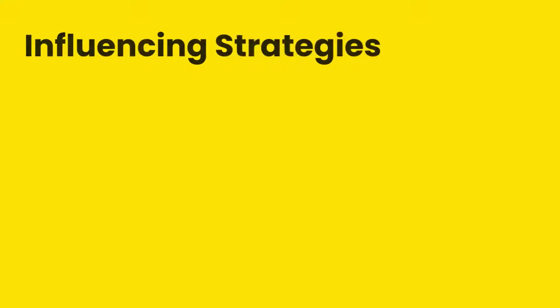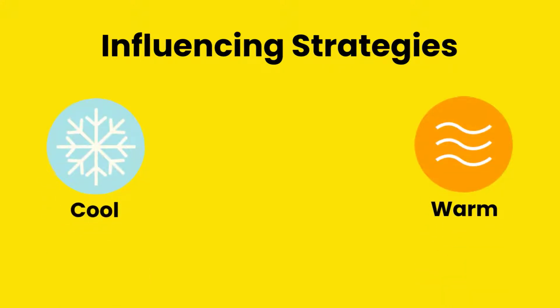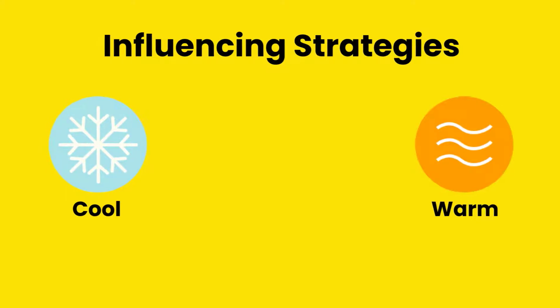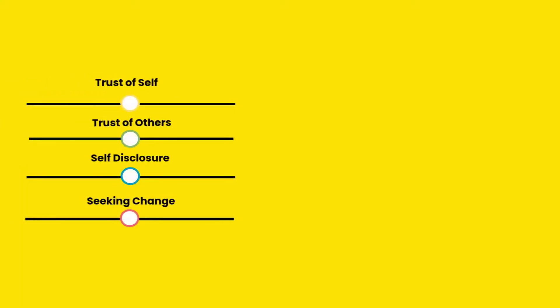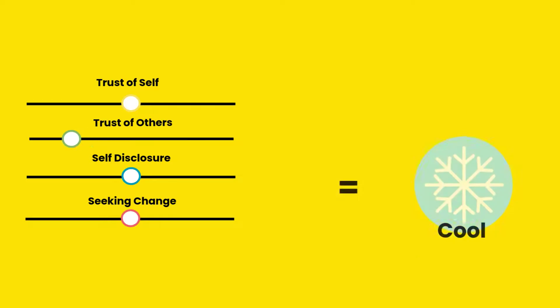When it comes to deploying influencing strategies, there are two temperatures that can be applied to each: warm and cool. Whether an influencing strategy is warm or cool depends on how you rate your trust of others. Exhibiting a high trust of others makes the influencing strategy warm, while adopting a low trust of others makes it cool.